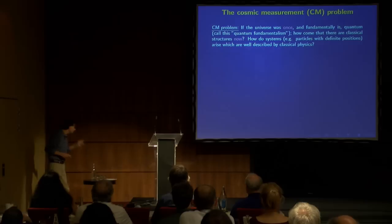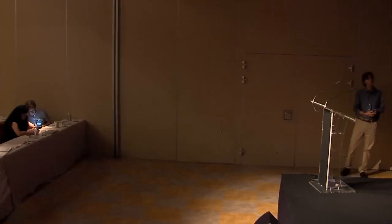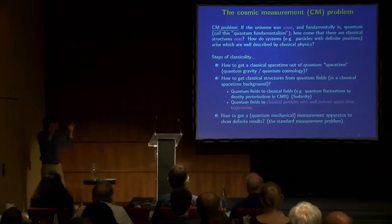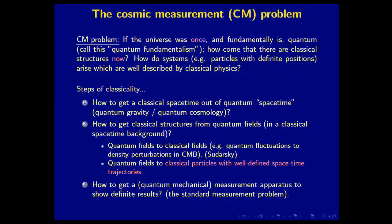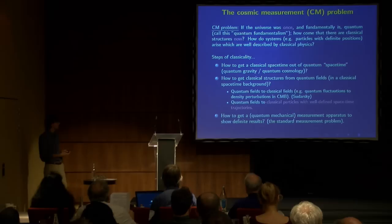Now, I want to say a little bit more about the cosmic measurement problem. The cosmic measurement problem says that if the universe was once, and fundamentally is, quantum, and we can call this, a little provocatively, but I think it's okay, to call that quantum fundamentalism. If this is so, then how come that there are classical structures now? How do systems, for instance, particles with definite positions, arise which are well described by classical physics? And it's well known in the literature that you will find various steps of classicality. First problem, of course, is how to get classical space-time out of a quantum space-time, space-time in square quotes, because we don't know, of course, what that looks like, or what will that be, or even if you can derive something space-time-like from something which is not space-time. That's quantum gravity and quantum cosmology.